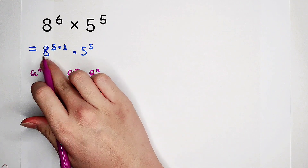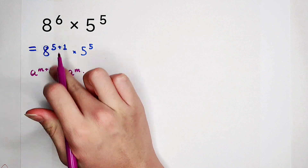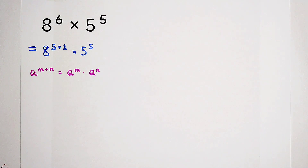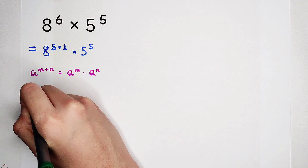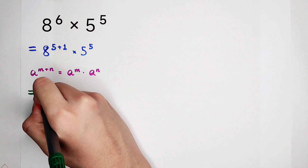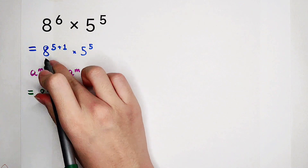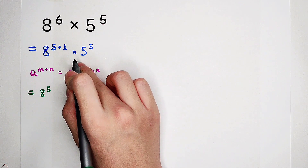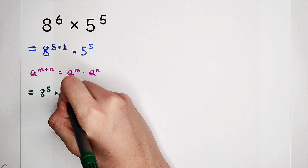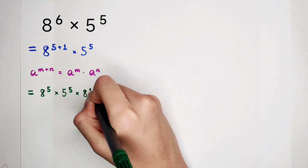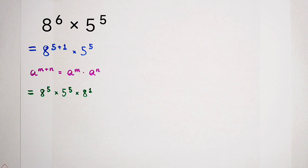Since now a is 8, m is 5, and n is 1 on the exponent. So by using this formula, it is equal to 8 to the power of 5, times 8 to the power of 1, times 5 to the power of 5. Since 8 to the power of 1 is just 8 — any number raised to the power of 1 equals itself.